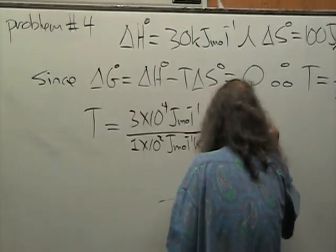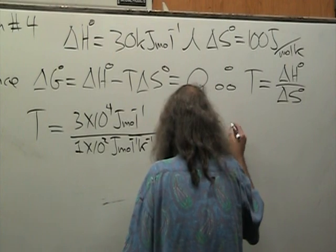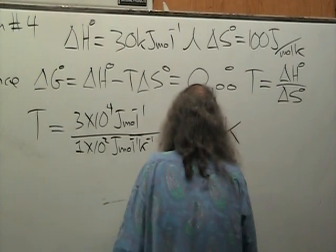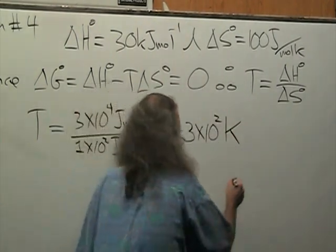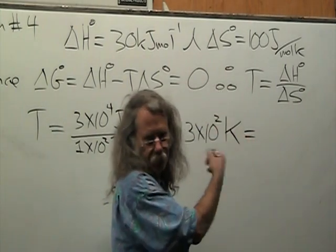So it's 3×10² Kelvin. We can retranslate this back - that's equal to 300 Kelvin.